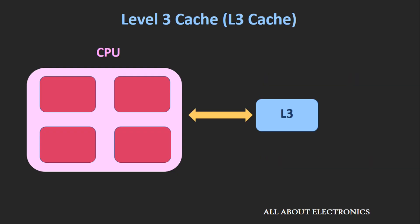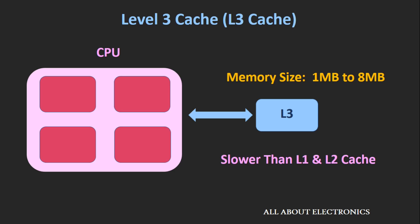The third kind is known as Level 3 cache or L3 cache. Not all processors have this — only some higher-end processors include it. L3 cache is used to enhance the performance of L1 and L2 caches. It is shared among all cores and located outside the CPU. The memory size is in the range of 1MB up to 8MB for high-end processors. It is slower than L1 and L2 cache, but still faster than RAM.